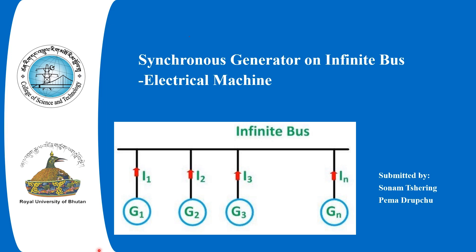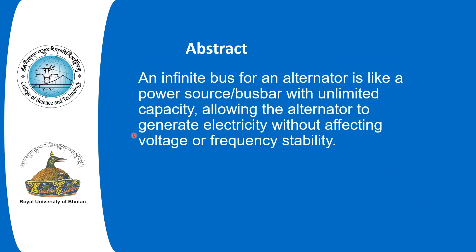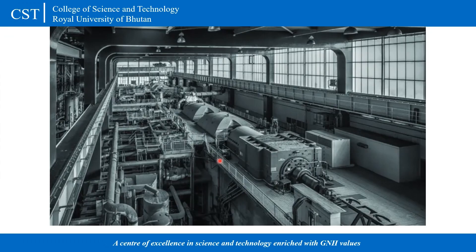In this video, I'm going to explain the infinite bus of electrical machines. Infinite bus means when synchronous generators are connected to a single bus, as you can see in this figure. When N number of alternators are connected to this single bus, it becomes the infinite bus. The infinite bus acts like a power source because it has unlimited capacity, and with large capacity, the voltage and frequency remain stable — that is, constant.